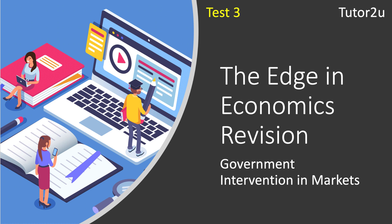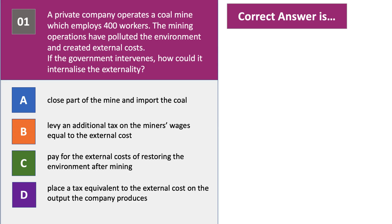Whenever you're ready, just press the pause button and then press play when you want to go through the answer together. Question number one: a private company operates a coal mine which employs 400 workers. The mining operations have polluted the environment, creating some external costs. If the government intervenes, how could it internalise the externality? Have a go please at question number one.